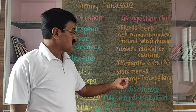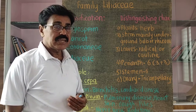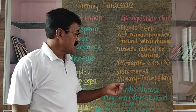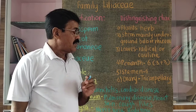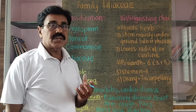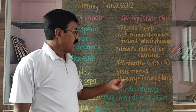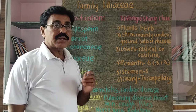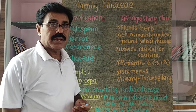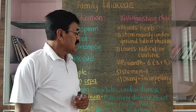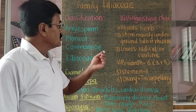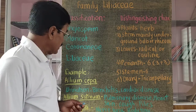The last character is that the ovary is syncarpous, superior, and tricarpellary, with axial placentation. That means there are three locules or three carpels, arranged in axial placentation, and each locule contains a single ovule. These are the diagnostic characters of family Liliaceae.